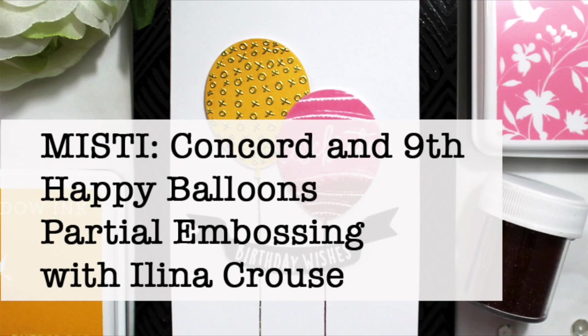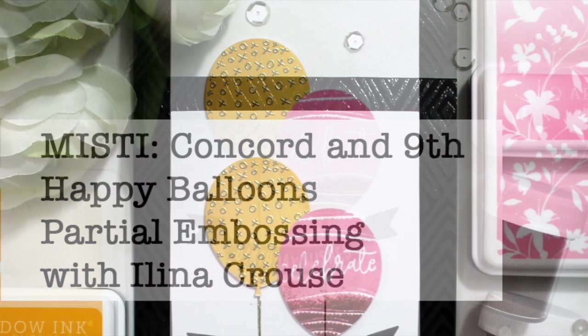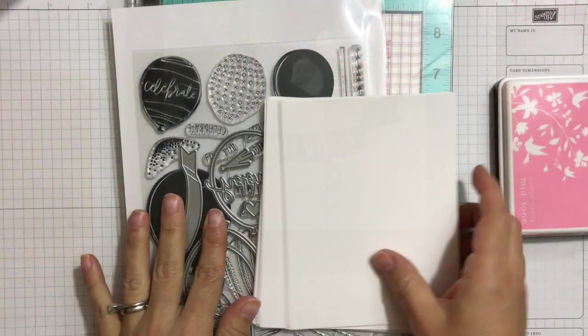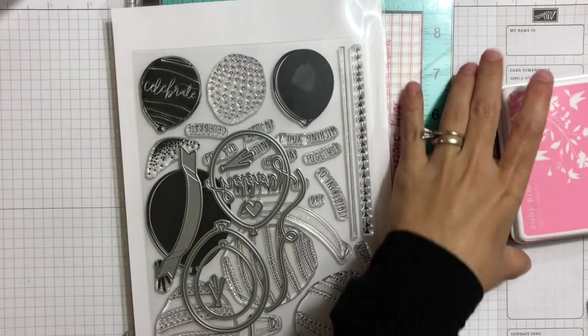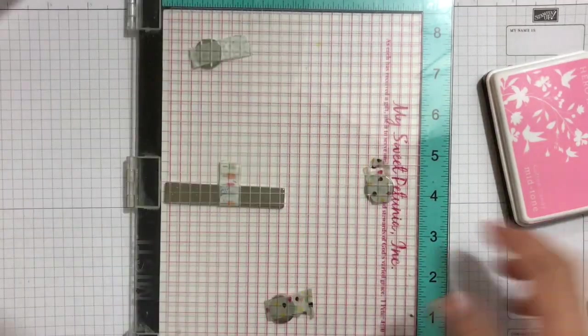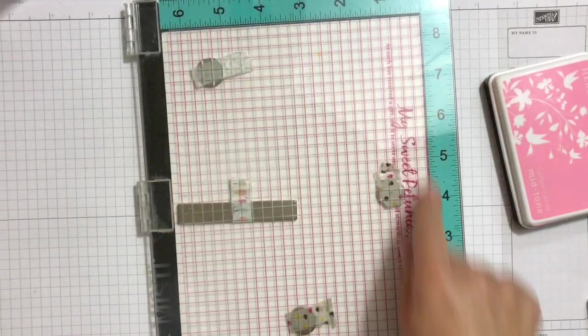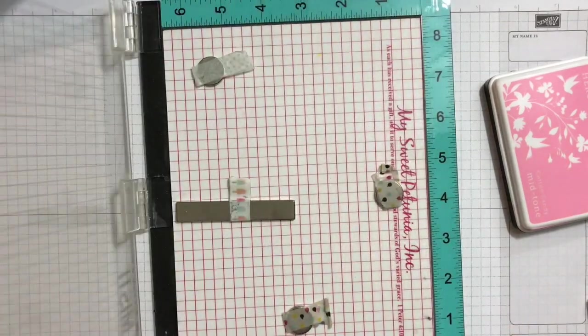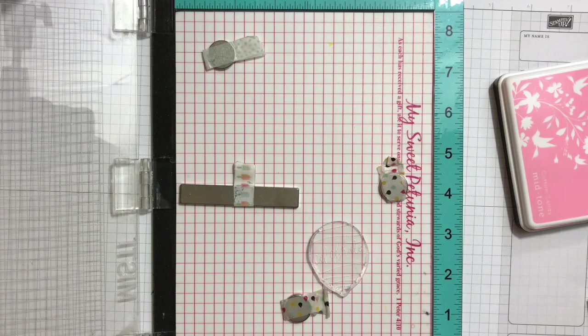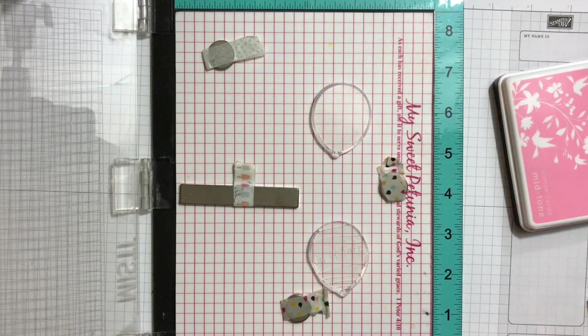Hi everyone and welcome, this is Elina and I'm back today with another card video. In this video I will show you how to do some partial embossing using the Concord and 9 happy balloons stamp set and coordinating dies and couple Hero Arts ink pads. I'm using butter bar and cotton candy.